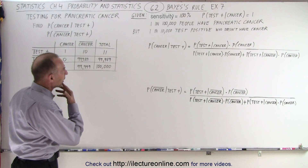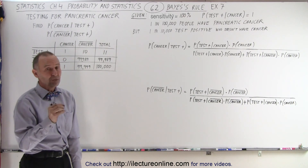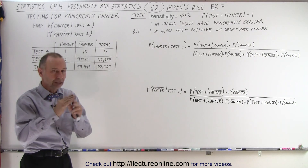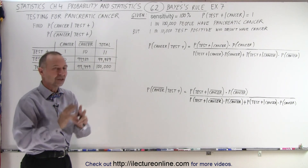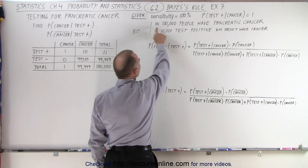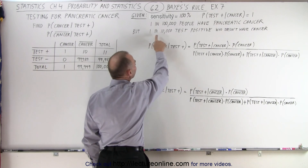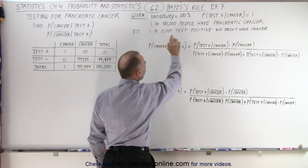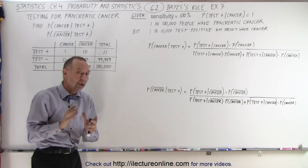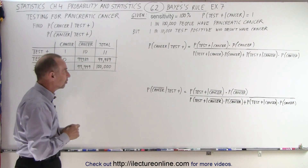It turns out that the specificity for this test is 100%, which means that if you do have pancreatic cancer, this test will flag it 100% of the time. On top of that, we're also told that only about 1 in 100,000 people have pancreatic cancer, and that 1 in 10,000 test positive who doesn't have cancer. So there's a small possibility that you will test positive if you don't have the cancer.